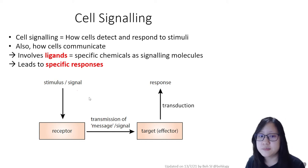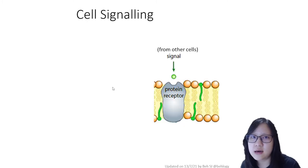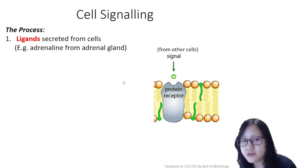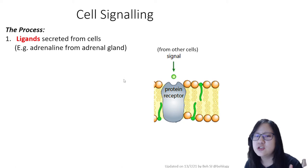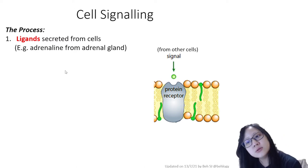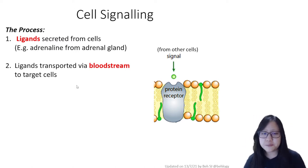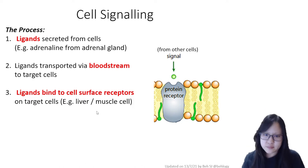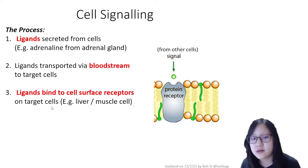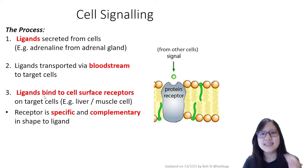The ligand must come from cell A — the first cell — to start the process. Ligands are secreted from cells; think of adrenaline from the adrenal gland. Cells produce adrenaline, which is a hormone, and secrete it into the bloodstream. Ligands are then transported via the bloodstream to target cells, where cell surface receptors can bind them.